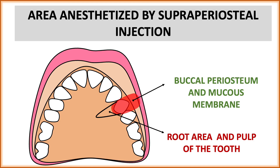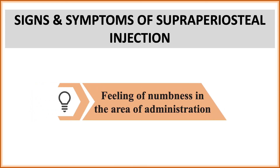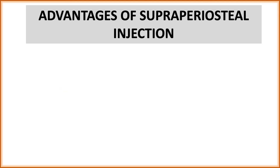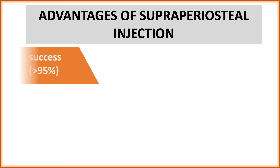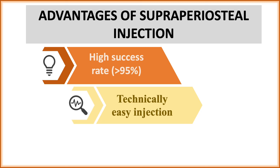If you need to anesthetize more than one tooth region, a nerve block should be given. The sign and symptom the patient feels with supraperiosteal injection is a feeling of numbness in the area of administration — ask the patient if they feel numb to confirm the infiltration. Advantages include a high success rate greater than 95% and a technically easy injection.